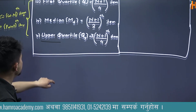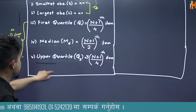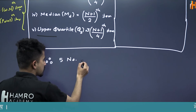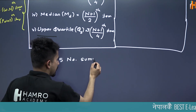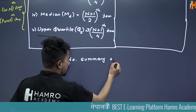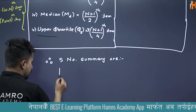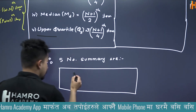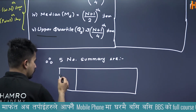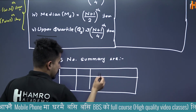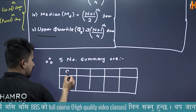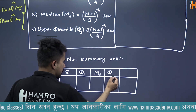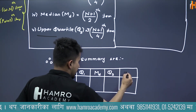We will have the 5 number summary and we will construct the box. We will have a table with 5 columns: 1, 2, 3, 4, 5. In ascending order we will have S, Q1, Md, Q3, and L — and we will fill in the values.